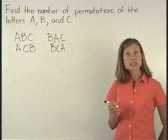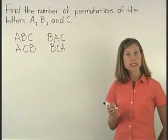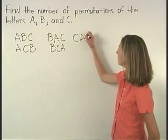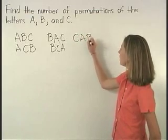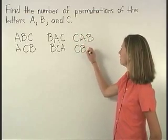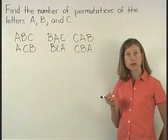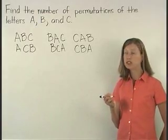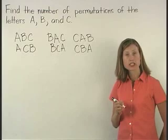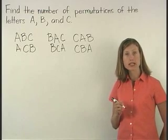Finally, let's list the permutations that begin with C. So we have CAB and CBA. If we count the number of permutations, we can see that there are six permutations of the letters A, B, and C.